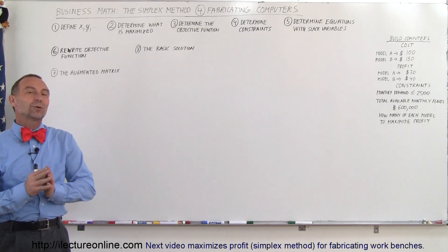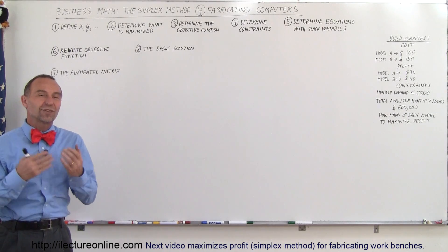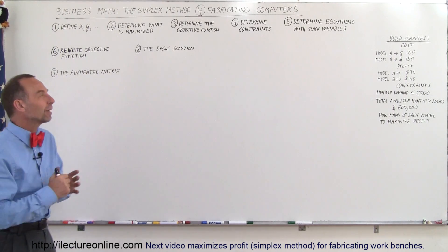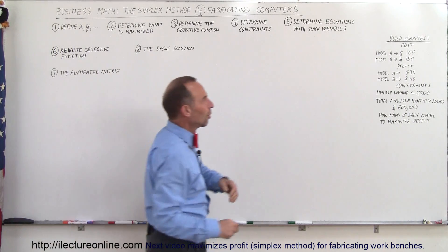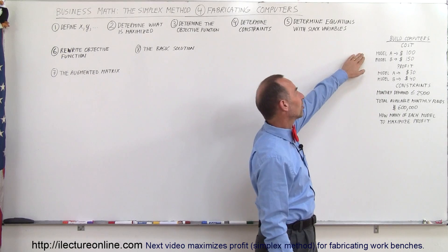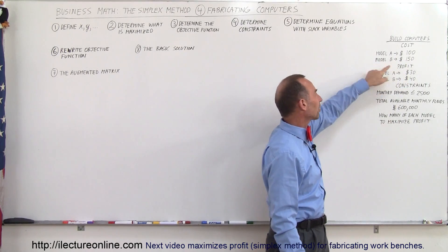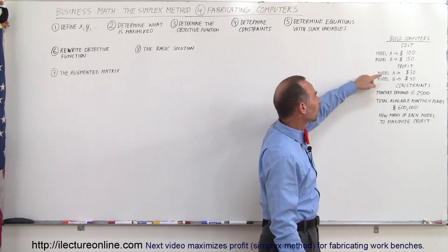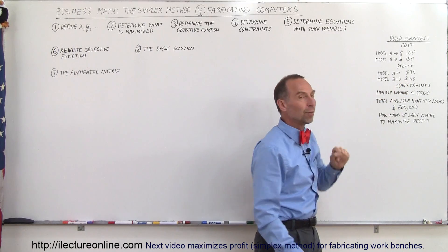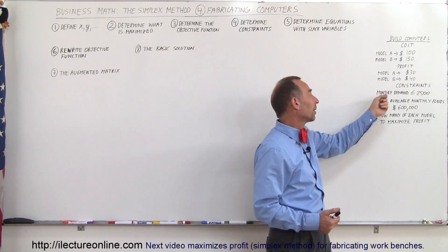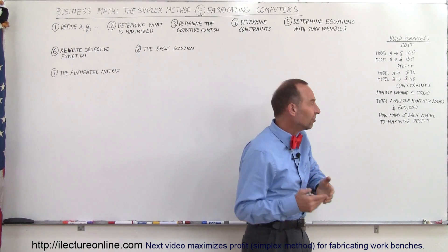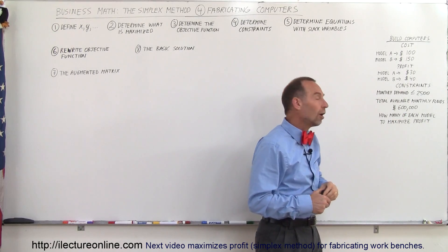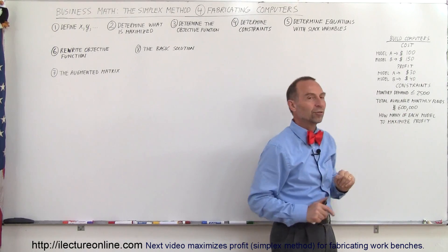Welcome to Electron Online. We're going to do another problem which requires the simplex method — the matrix method — of optimization. The problem goes as follows: we're going to build computers. We have two models. Model A costs $100 to manufacture and Model B costs $150. We can expect a profit of $30 for Model A and $40 for Model B. The monthly demand will be 2,500 or less, and total available monthly funds are $600,000. How many of each model should we make to maximize the profit?